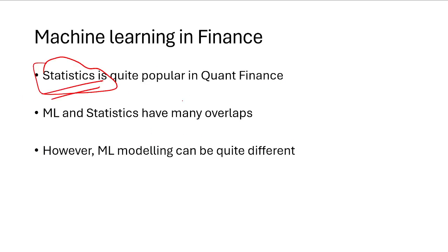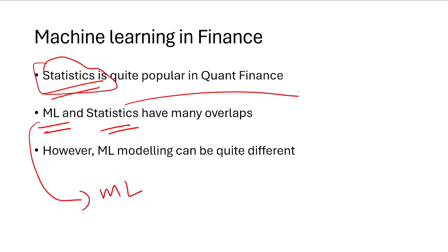Statistics is by far the most popular academic area in quant finance — many people might think it's machine learning, but statistics is still quite dominant. Machine learning and statistics do overlap significantly; for example, regression techniques appear in both fields. However, machine learning differs in important ways — for instance, tree-based modeling is popular in machine learning but not in statistics.